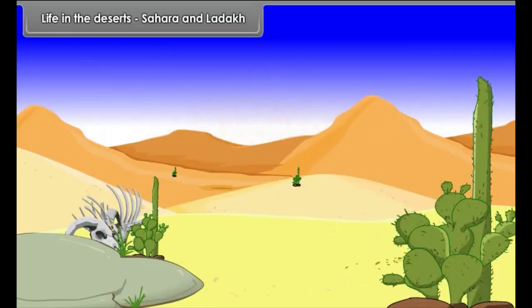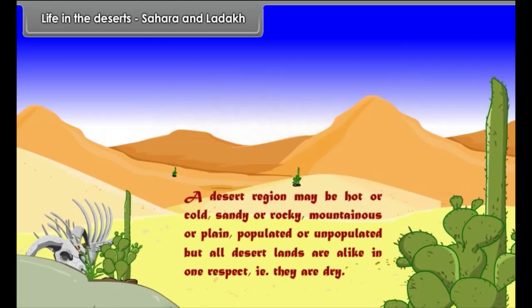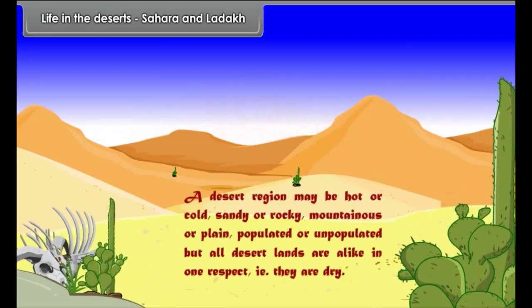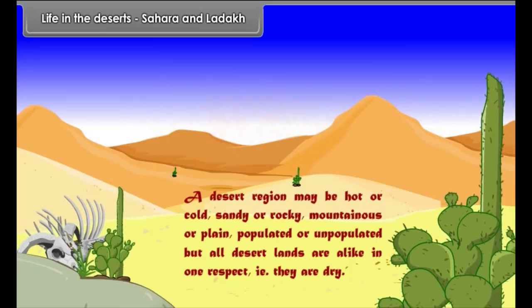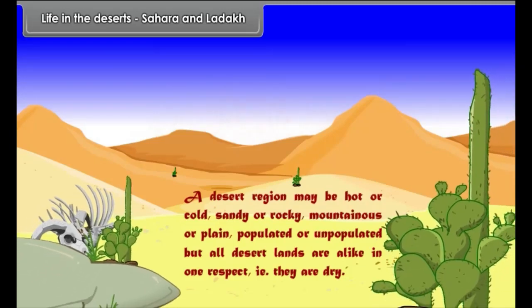Life in the Deserts: Sahara and Ladakh. A desert region may be hot or cold, sandy or rocky, mountainous or plain, populated or unpopulated, but all desert lands are alike in one respect — that is, they are dry.